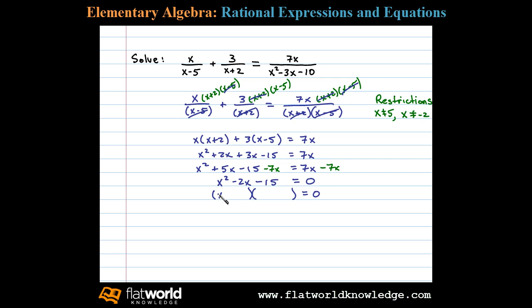Here x squared factors as x times x, and we'll use 3 and 5 as the factors of 15. If we write minus 5 and plus 3, we'll have negative 5 times positive 3 is negative 15, and negative 5x plus 3x is negative 2x.